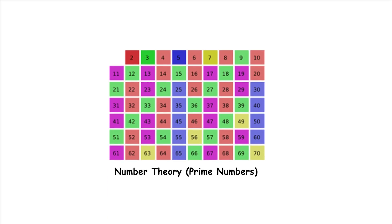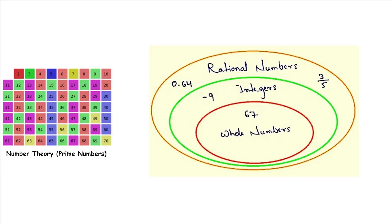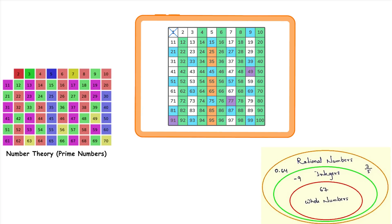Number theory. Prime numbers. Number theory is a branch of mathematics focused on the properties and relationships of numbers, especially whole numbers. Prime numbers are a key part of this. They are numbers greater than one that have no positive divisors other than one and themselves. For example, 2, 3, 5, and 7 are prime numbers because they can't be divided evenly by any other numbers.